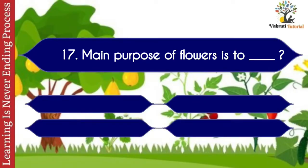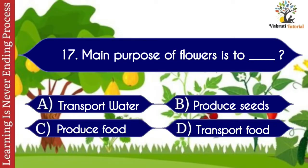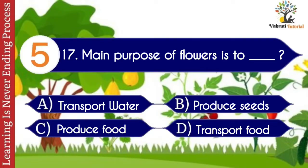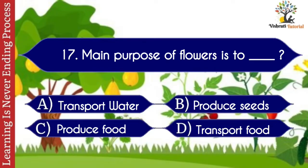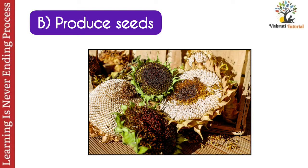Question number seventeen: the main purpose of flowers is to dash. Options: A. Transport water, B. Produce seeds, C. Produce food, D. Transport food. The correct answer is B. Produce seeds. The main purpose of flowers is to produce seeds.